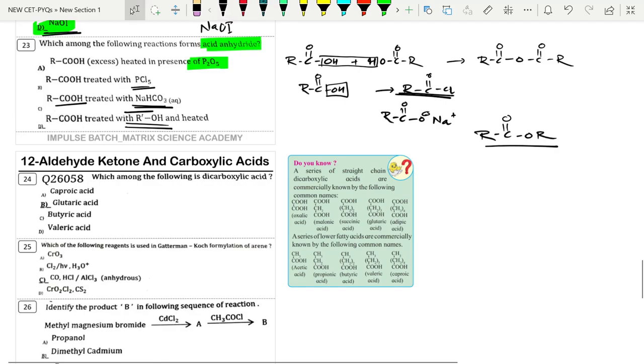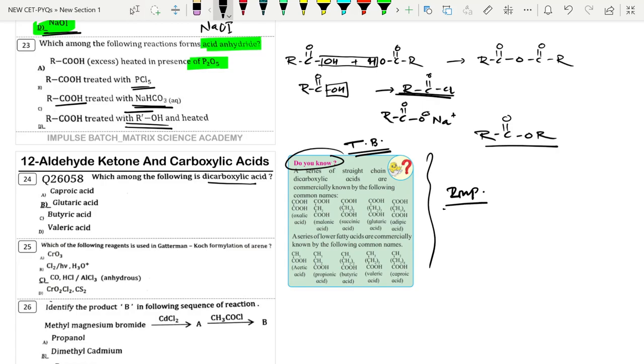Which among the following is dicarboxylic acid? Glutaric acid and adipic acid are dicarboxylic acids, whereas acetic acid, propionic acid, butyric acid, valeric acid, and capric acid are monocarboxylic acids with increasing number of carbons.